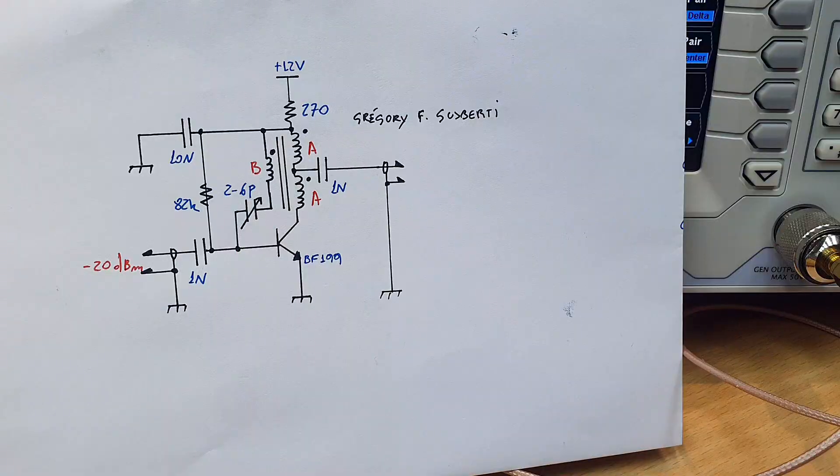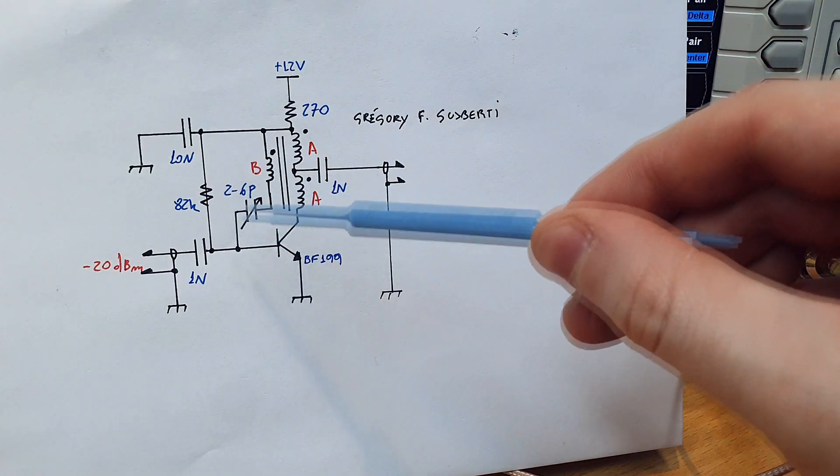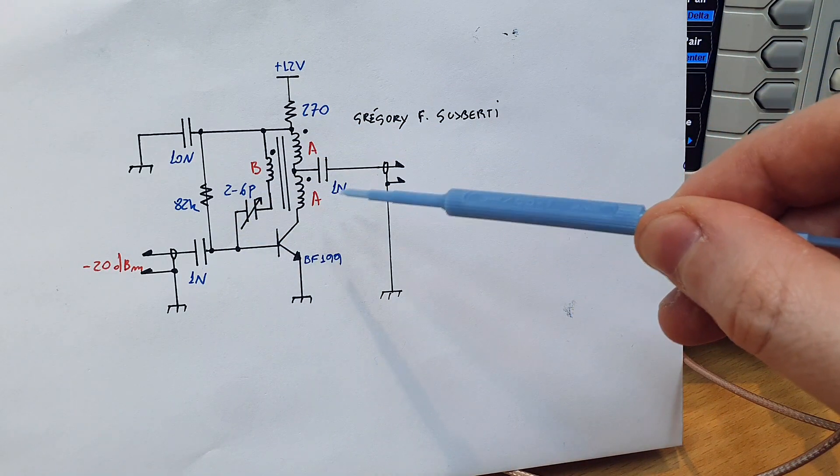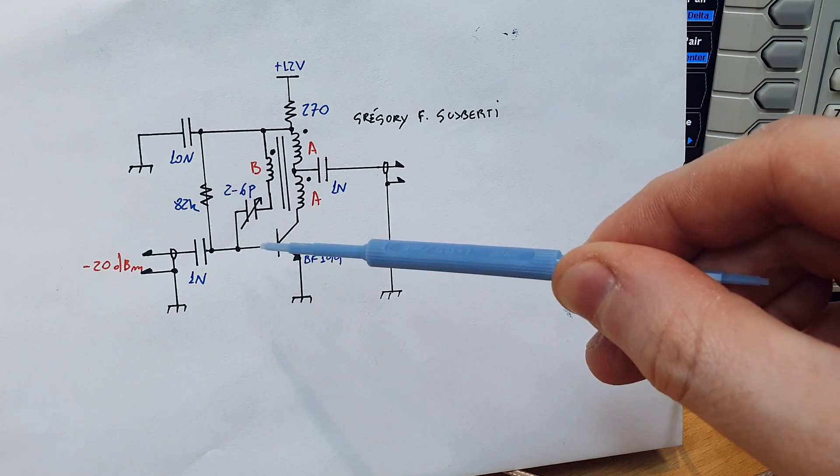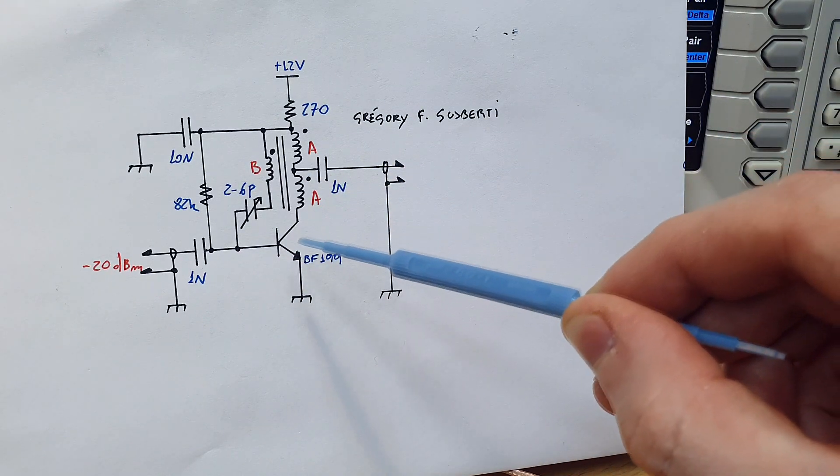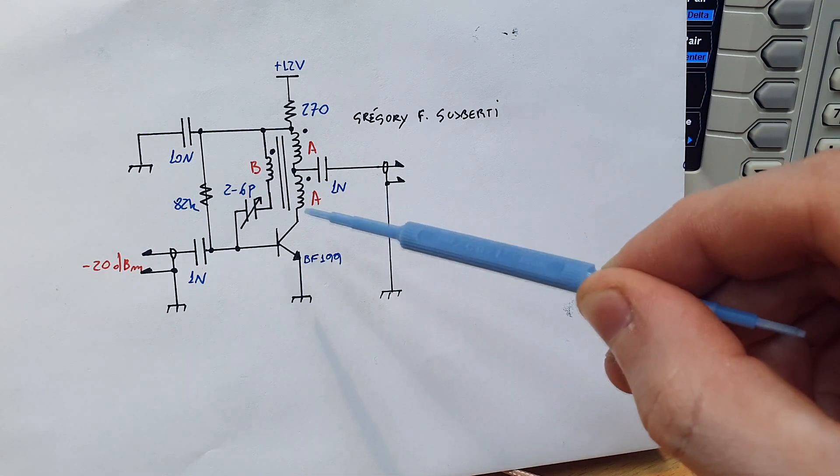This technique was used a lot in the vacuum tube era and in the first days of transistors. In that time, transistors and vacuum tubes were expensive and engineers needed to take the maximum gain possible from each amplifier stage. The neutralization technique uses a feedback capacitor that feedbacks part of the output signal to the input of the amplifier, neutralizing the dominant pole of the amplifier, increasing its bandwidth.